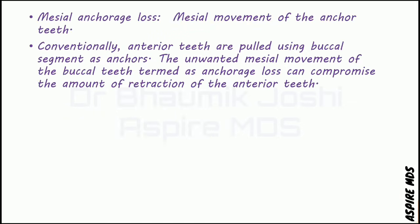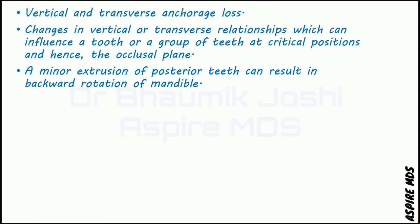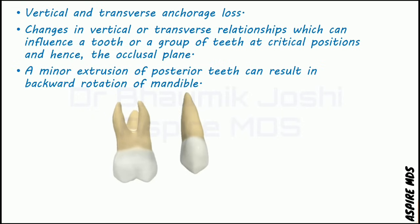Anchorage loss is of two types. Mesial anchorage loss is where there is mesial movement of the molar teeth when trying to retract the anterior tooth — this is unwanted mesial movement. Another important type is vertical or transverse anchorage loss, where in addition to mesial movement of the anchor tooth, there is also vertical or transverse movement. This causes extrusion of the posterior anchor teeth, ultimately leading to backward rotation of the mandible. Vertical anchorage loss is not desirable in any case, while mesial anchorage loss may sometimes be desirable depending on the condition.